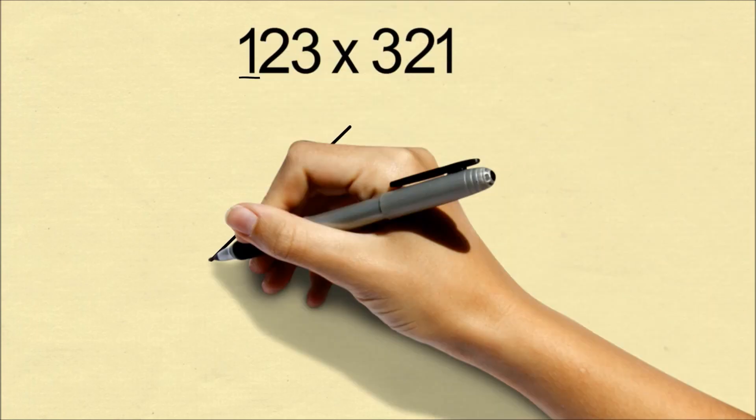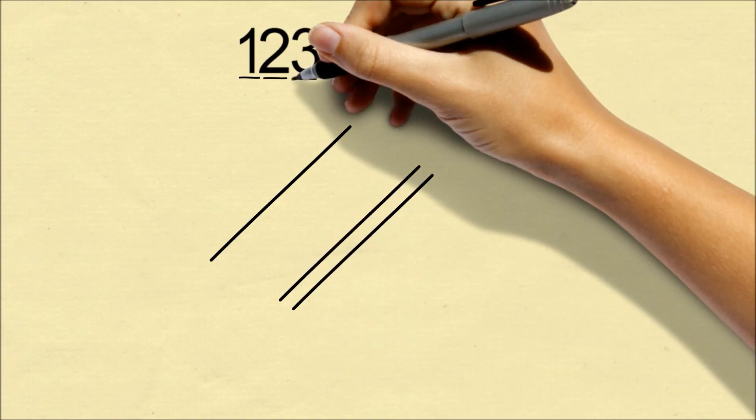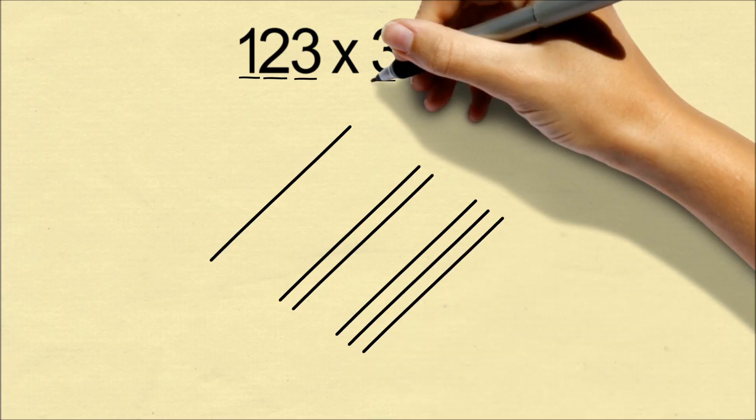We can use this technique even for larger numbers. For 123 times 321, we use exactly the same process of drawing lines for each digit of the number.